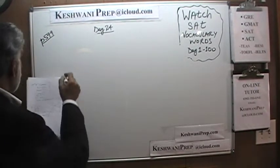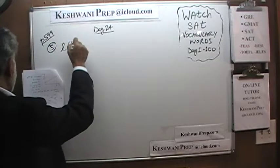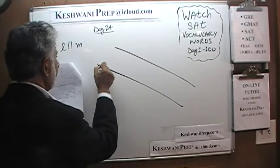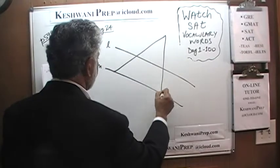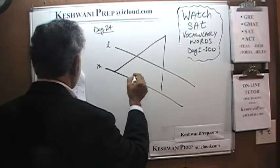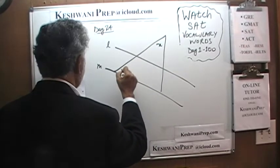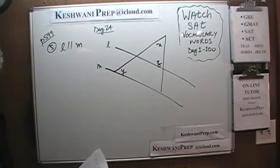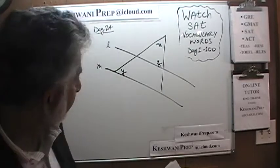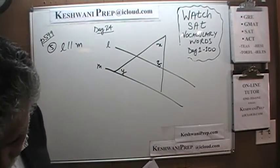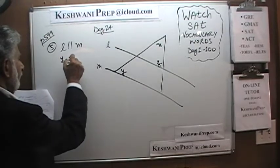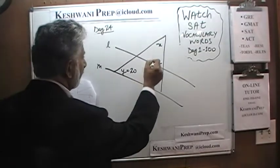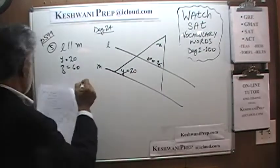In number five, we are told that line l is parallel to line m. There is angle x, angle y, and angle z at the intersection. We are further told that y equals 20 and z equals 60. The question simply is: how much is x?